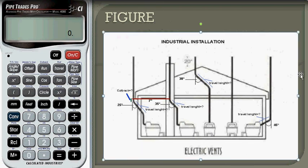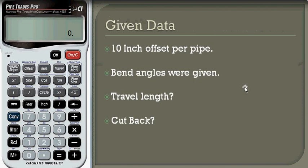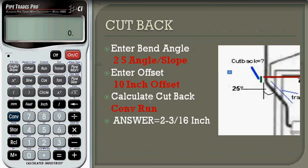To find cut back, no calculation is needed — we can use the pipe trades pro directly. From the given question, a 10-inch offset is given and the bend angles are given. We need to find one cut back and four travel lengths using the pipe trades pro.